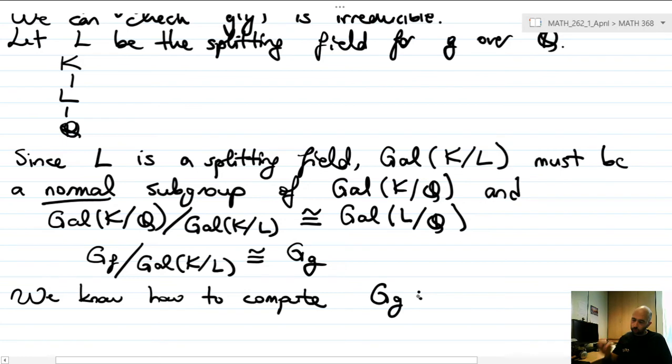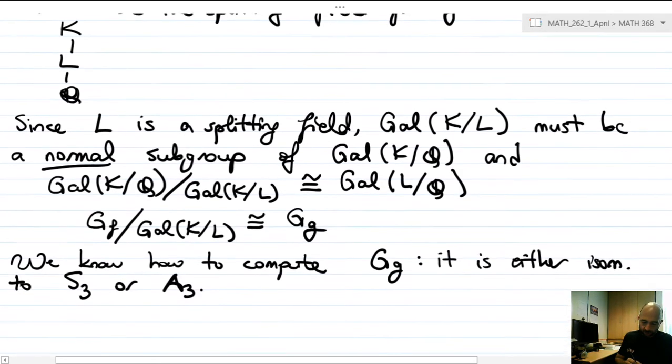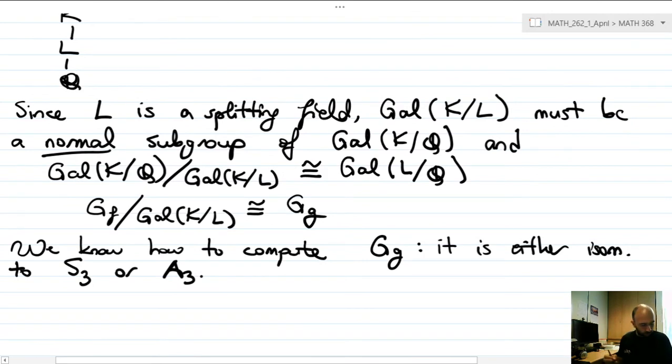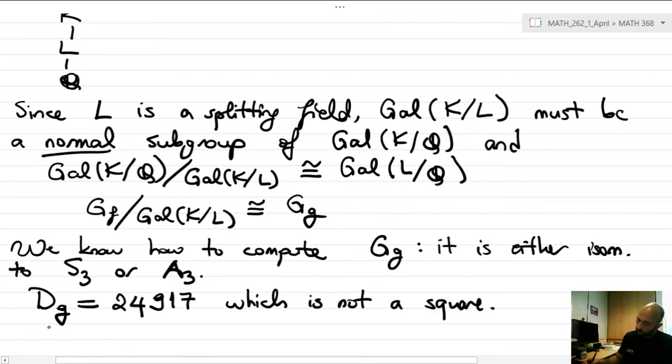Well, the cubic is irreducible so it's either isomorphic to S_3 or A_3. All you have to do is look at the discriminant of g itself. The discriminant of g - you just make a direct computation - it turns out to be this large prime 224917, which is not a square.